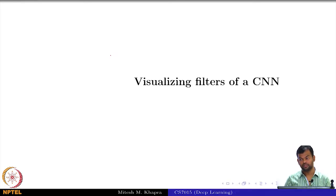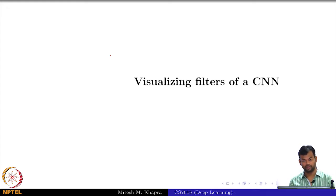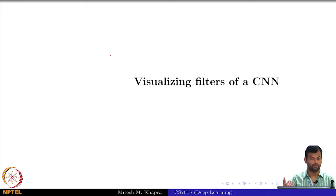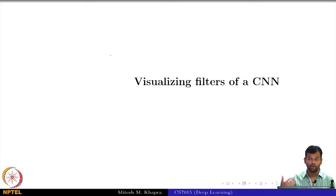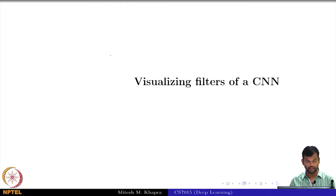Now this was visualizing the neurons inside the convolutional neural networks. Neurons, remember, are the outputs — these are the feature maps. What about the weights themselves? What are the weights in a convolutional neural network? The filters — the filters themselves are the weights.